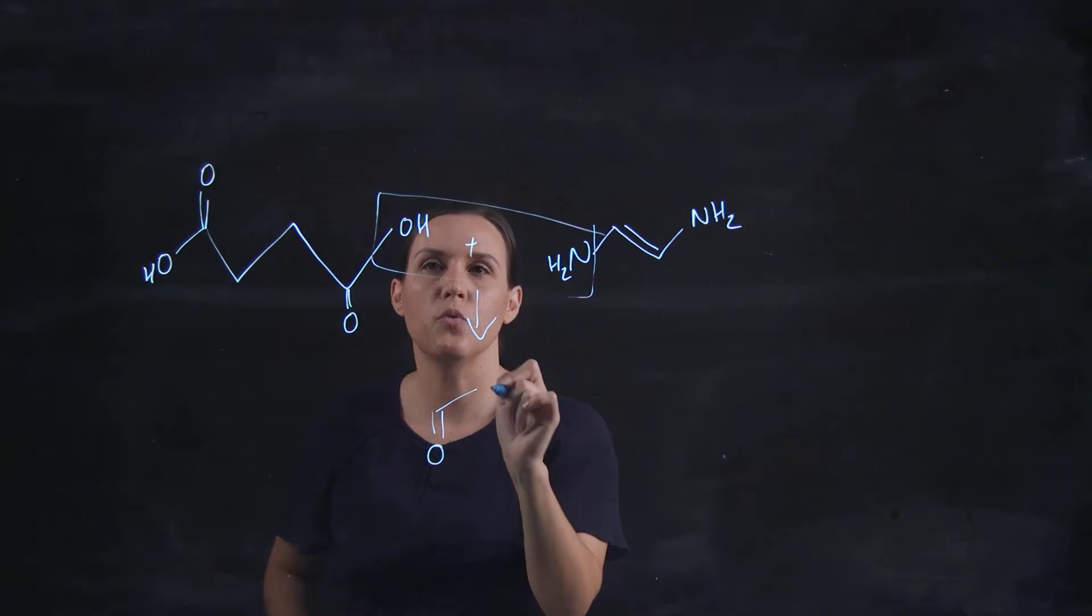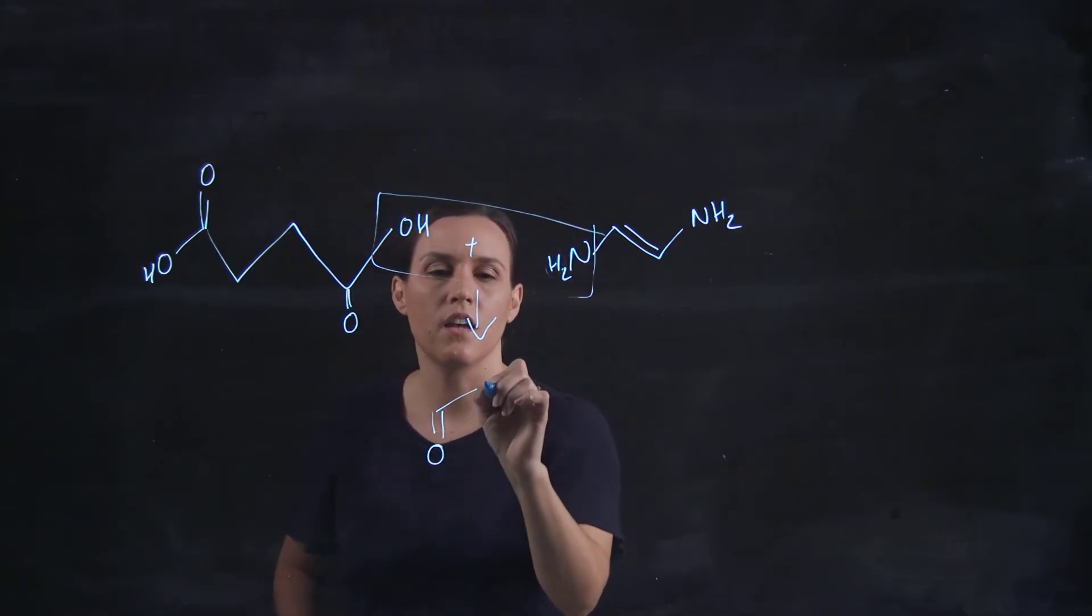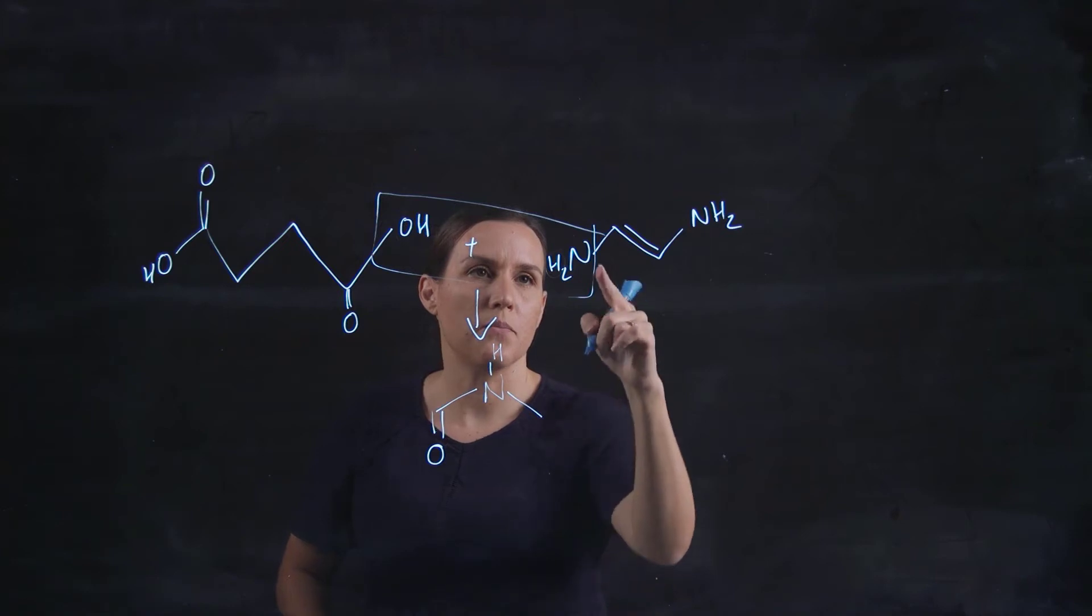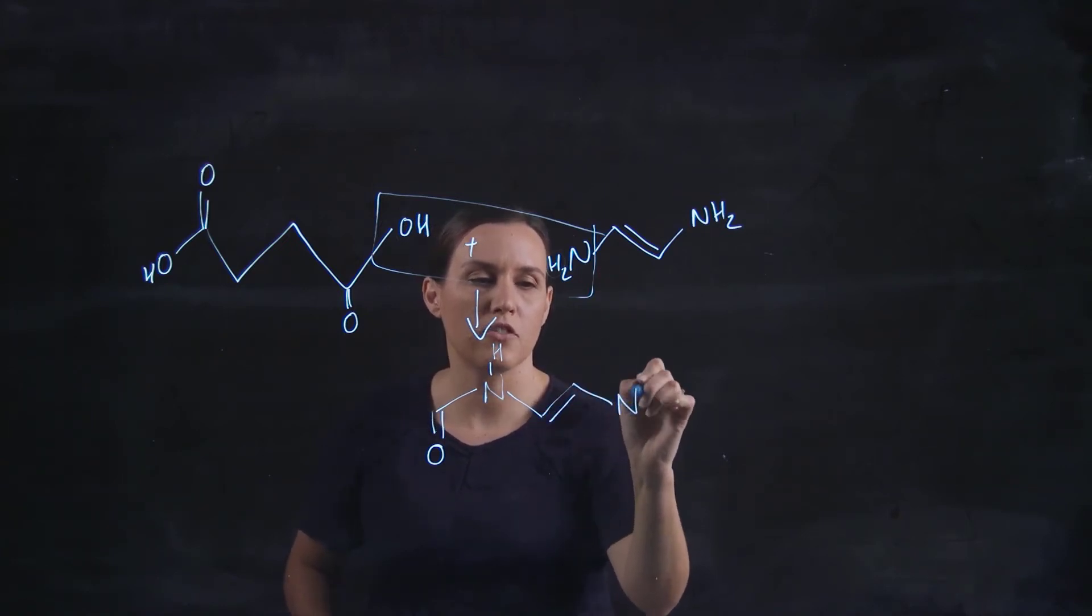So we have the loss of water, so OH and one of these hydrogens. We'll get the nitrogen there. It'll have a hydrogen still attached. And then we would be going to our double bond and then our other nitrogen.